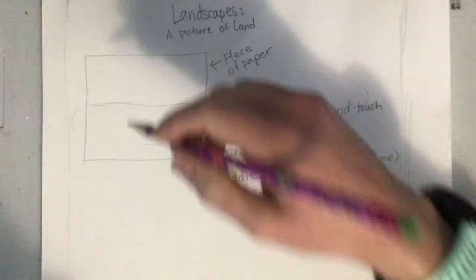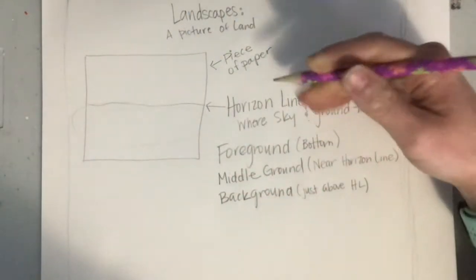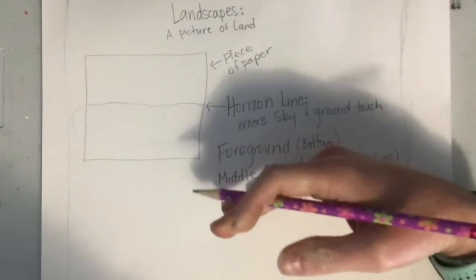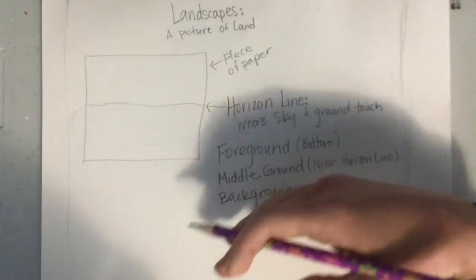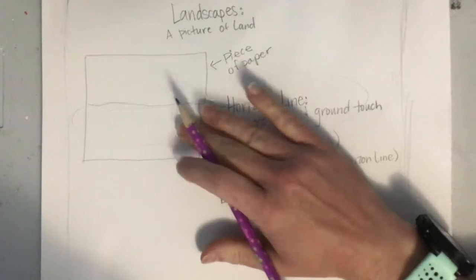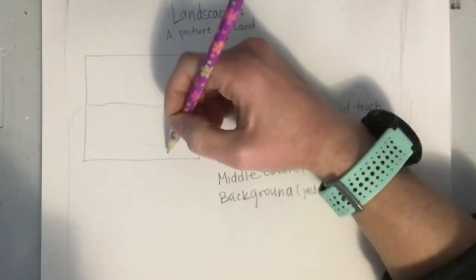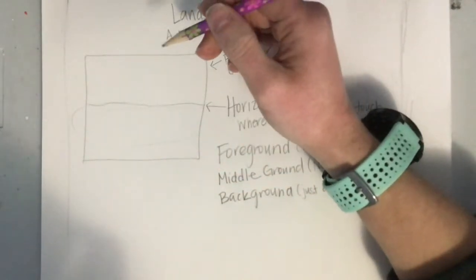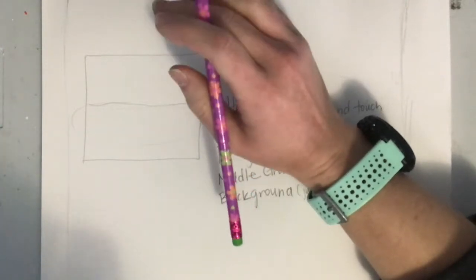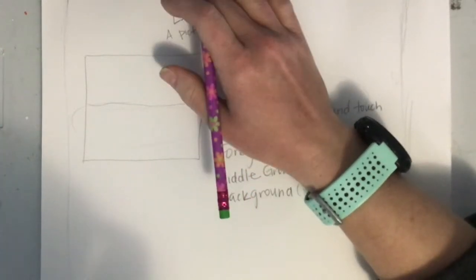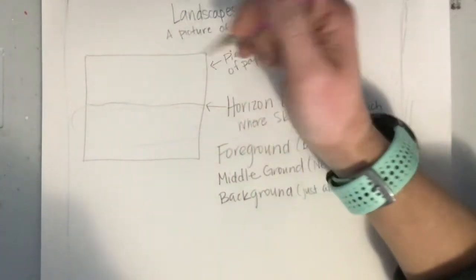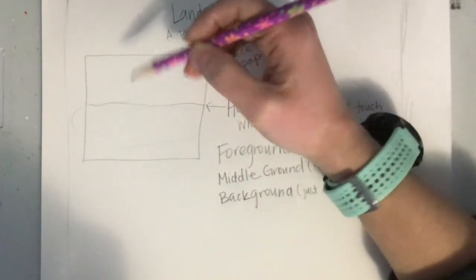I'm going to start with my foreground because these are the things that are in the front — they're on top of everything else. If I draw the background first I'm going to end up covering most of it up. So when I'm drawing I like to start with the foreground. And I always start with a pencil no matter what tool I'm using, because pencils can be erased. If I start with paint, marker, or crayon I can't take it away once it's on there.